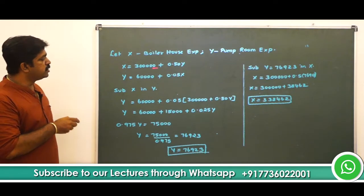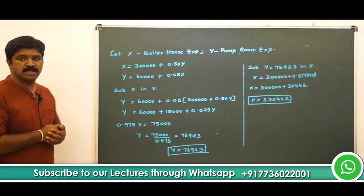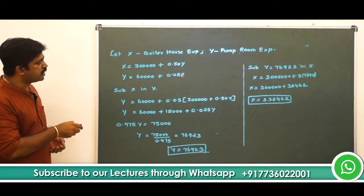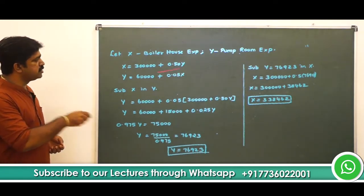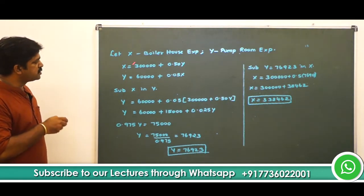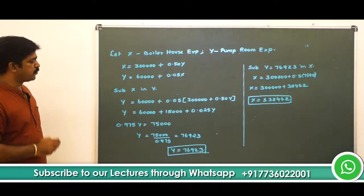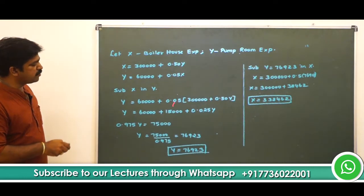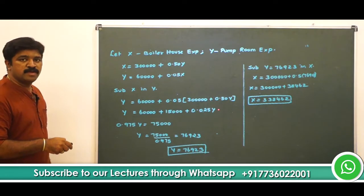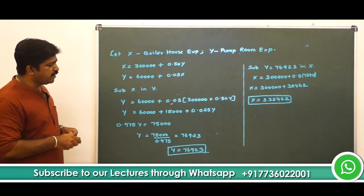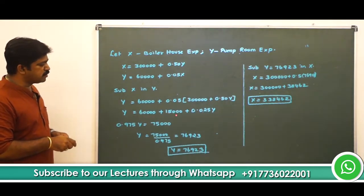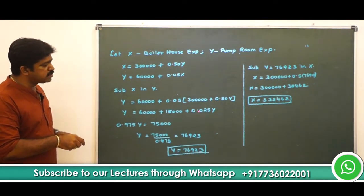So we have two equations: x = 3,00,000 + 0.5y, and y = 60,000 + 0.05x. We substitute x into the second equation: y = 60,000 + 0.05 × (3,00,000 + 0.5y), which gives y = 60,000 + 15,000 + 0.025y, so y = 75,000 + 0.025y.